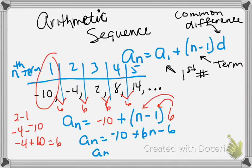Again, I've got to simplify it. So I'm grouping my like terms, which is negative 10 and negative 6. And that should give me negative 16 plus 6N. So this is our equation.